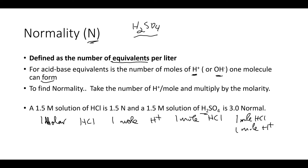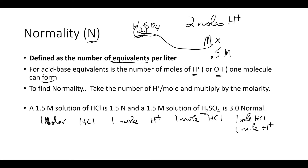For sulfuric acid, H₂SO₄, for every one mole we have two moles of H⁺, so we multiply the molarity by the number of H⁺ or OH⁻ ions. For example, 0.5 molar calcium hydroxide has two OH⁻ per formula unit, giving us 1.0 normal.